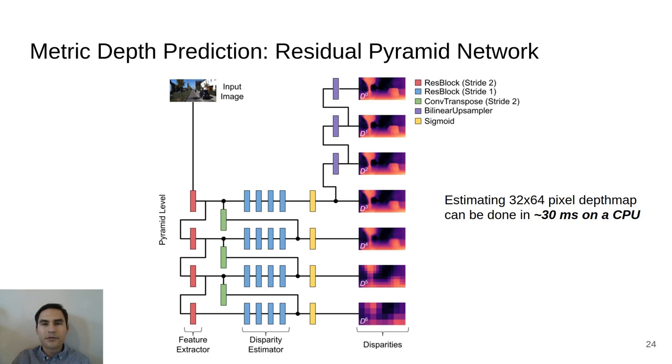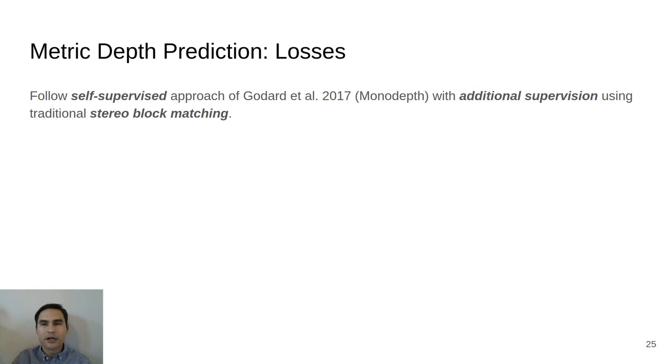The losses we use to optimize our network are based on the self-supervised approach of Godard et al., with additional supervision using traditional stereo block matching. Our training data consists of calibrated stereo image pairs. At training time, each image in the pair is passed through the network to generate a disparity map. These left and right disparity maps are then used to generate our training losses. At test time, however, only single monocular images are required to generate our metric depth predictions.